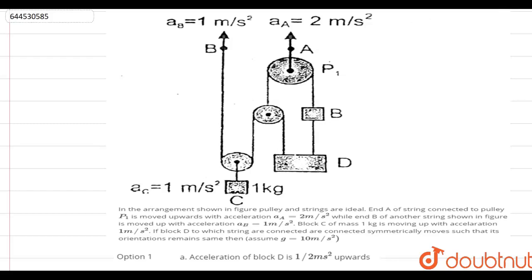Hello everyone. The question says: in the arrangement shown in the figure, pulleys and strings are ideal. End A of a string connected to pulley P1 is moved upwards with acceleration 2 m/s², while end B of another string shown in the figure is moved up with acceleration 1 m/s². Block C of mass 1 kg is moving up with acceleration 1 m/s².